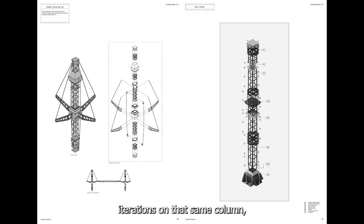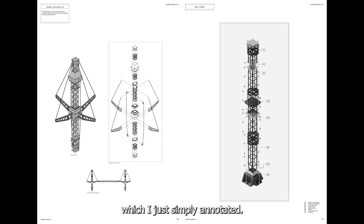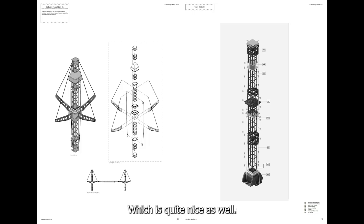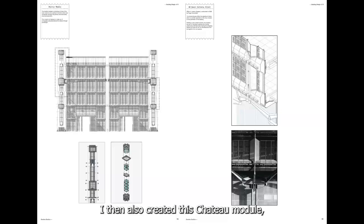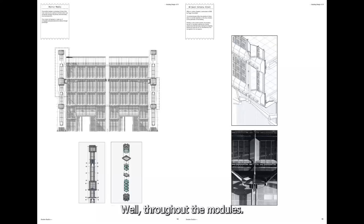Here are more iterations on that same column — some are SketchUp exports, line drawings, exploded axonometrics edited in Illustrator. The one on the right is actually a render which I simply annotated. Now I'm starting to think more about materiality — the trolleys themselves are made of metal, so this chrome aesthetic was starting to creep in with the shopping trolleys, which was quite nice. I then created this shutter module, incorporating both the columns and the shutters. I've got more of a door frame element as well, with various variations throughout the modules.